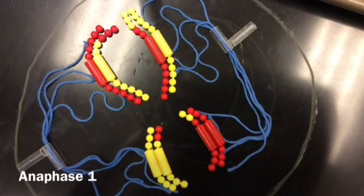In anaphase I, the spindle fibers pull the homologous pairs apart and into their respective poles. The cell also begins to widen to accommodate the movement of the sister chromatids.